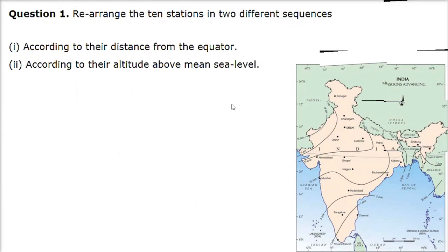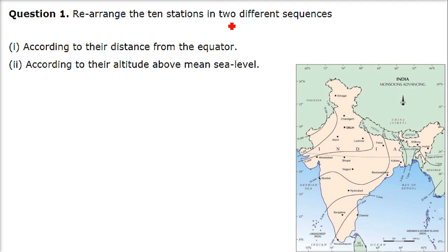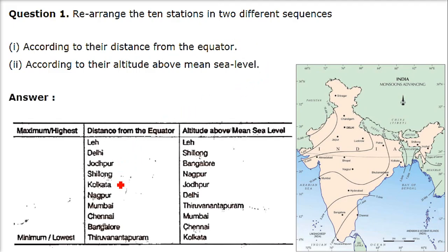We are taking chapter number 4, climate. We have to rearrange the 10 stations in two different sequences according to their distance from the equator. If you see the question, we have to arrange them according to distance from the equator. We have an equator here, ranging from 8 degrees to around 37 degrees.